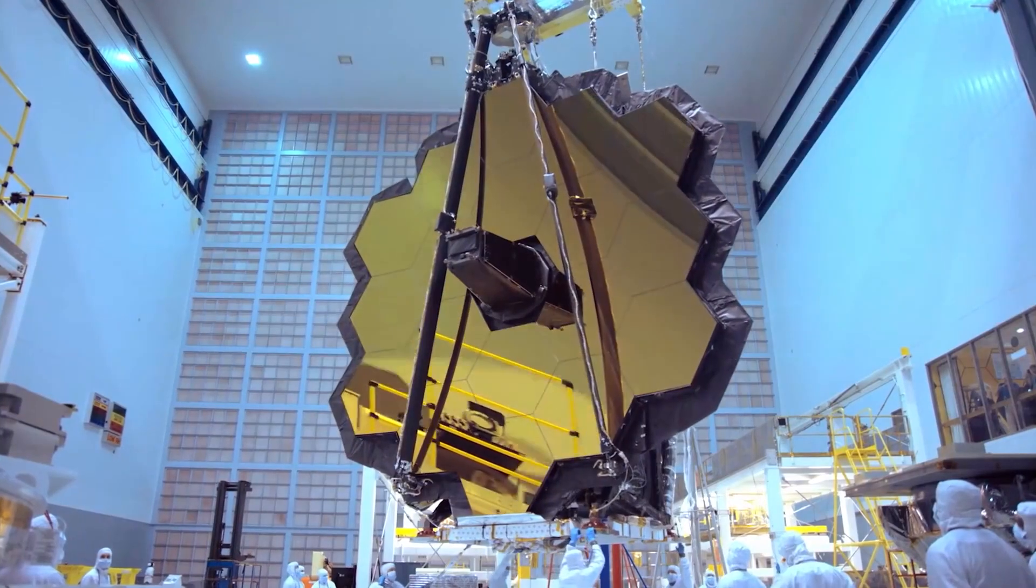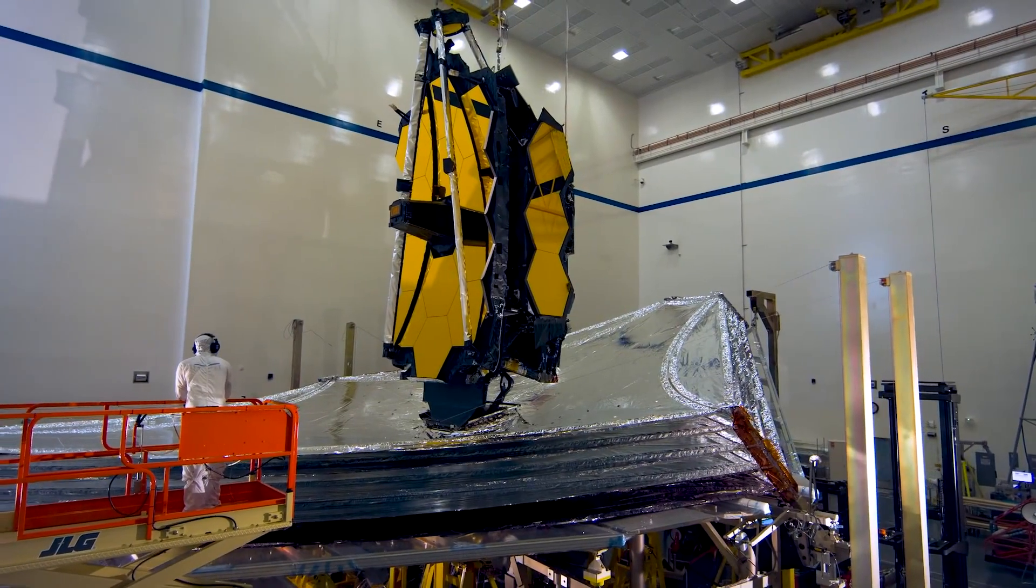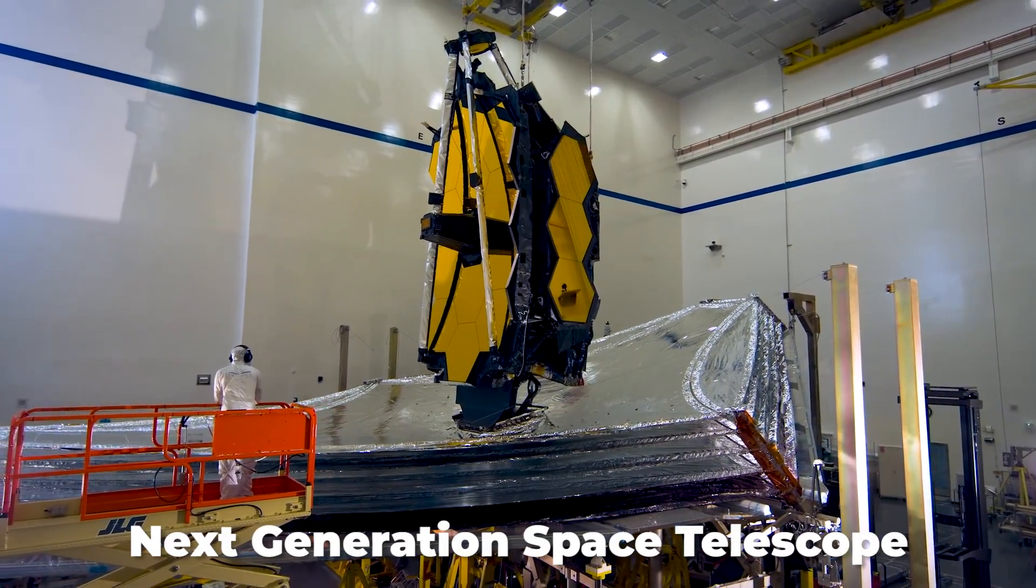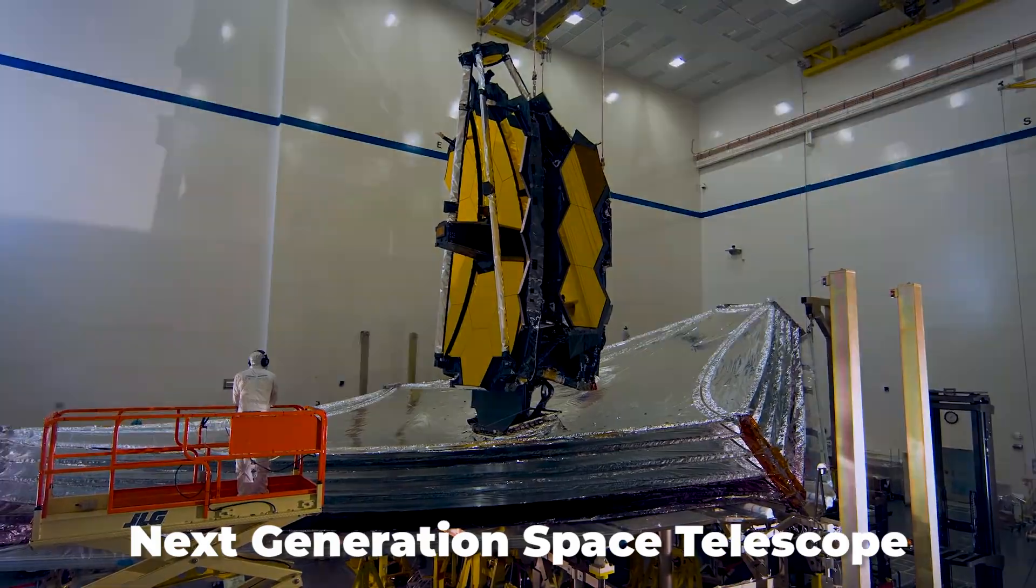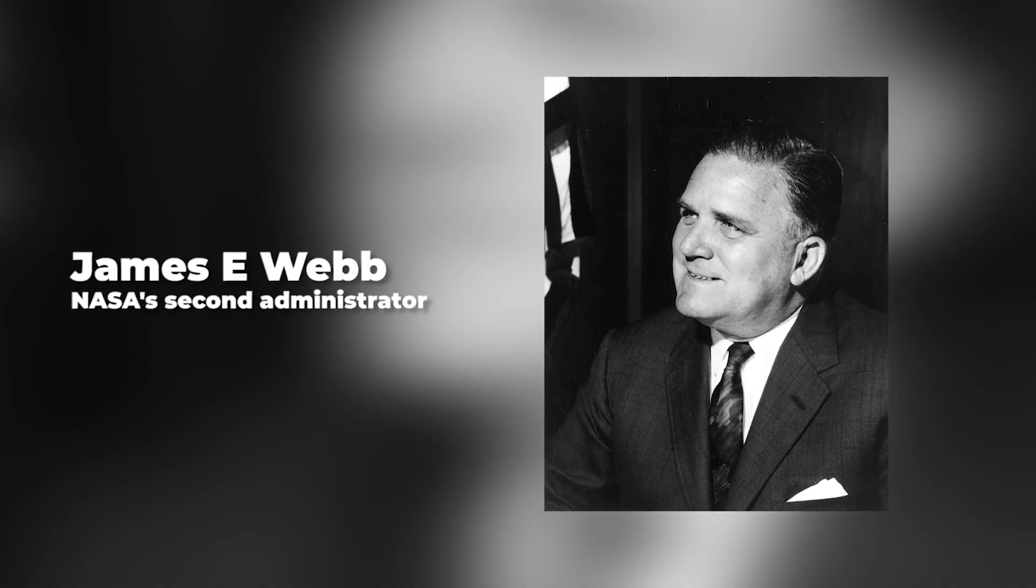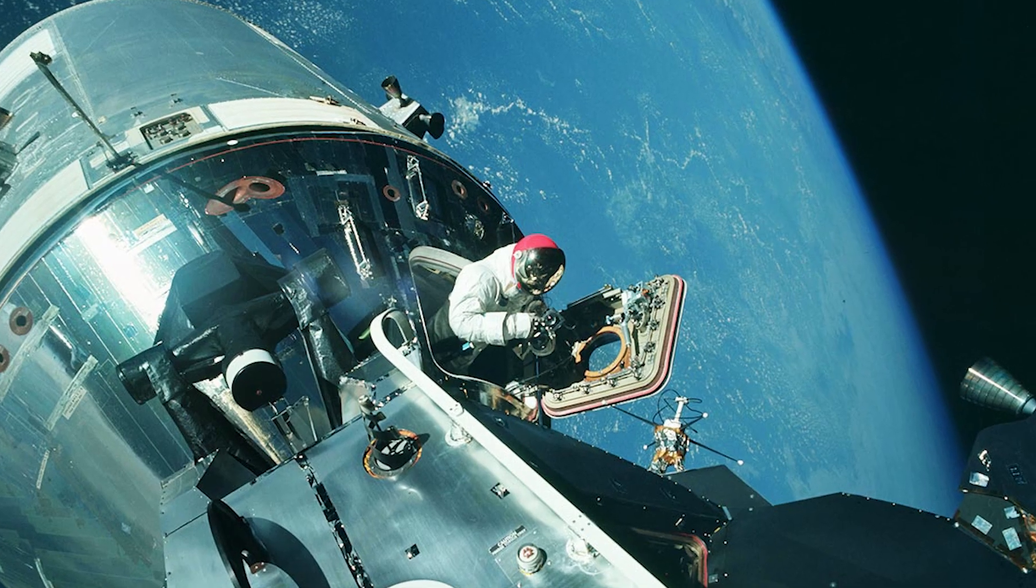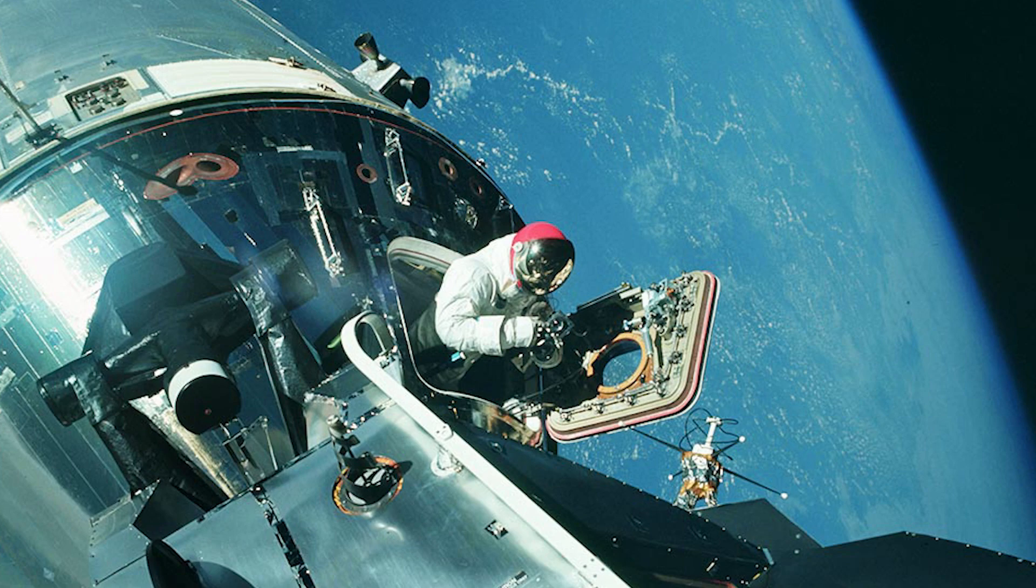Now you might be thinking, why exactly is it called the James Webb Telescope? Well, during its initial days, the telescope was called the Next Generation Space Telescope, but it was then renamed as the James Webb Space Telescope to honor James E. Webb, NASA's second administrator, and he was also the one responsible for putting humans in space with the Apollo missions.